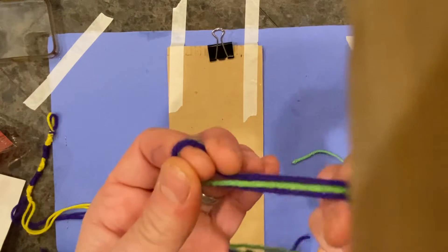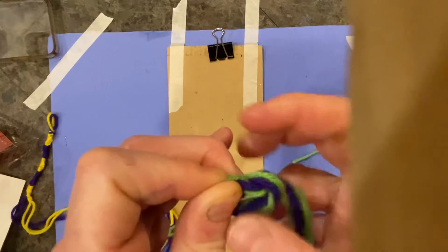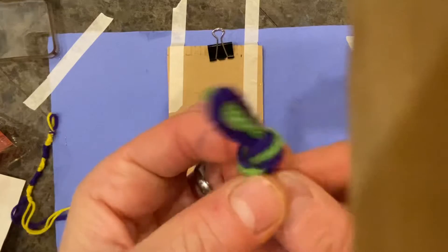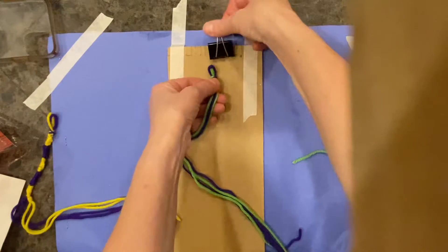And with the loop, I'm going to make a knot. Like a knot at the top. Pull it through. And there's my knot that I'm going to make stay on my clipboard.